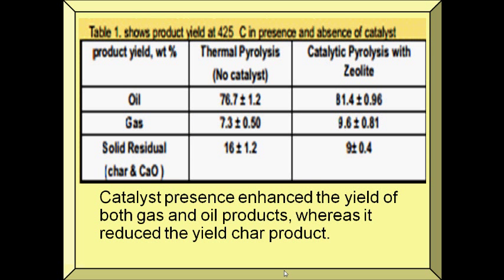This shows the product yield with the presence and absence of catalyst. The yield of gas and oil were enhanced and the char was reduced when catalyst is used.